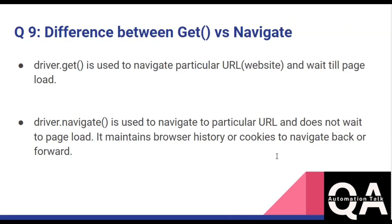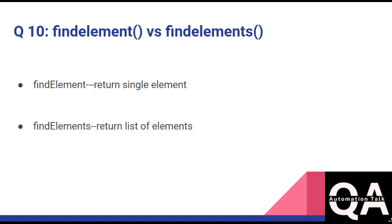The next question is: what is the difference between the get() and navigate() methods in Selenium? Both methods are used to navigate to any URL or web page. The key difference is that driver.get() waits until the page is fully loaded, whereas driver.navigate() does not wait for the page to load but stores browser history and cookies, allowing you to use methods like navigate back, navigate forward, or refresh.